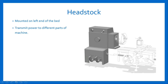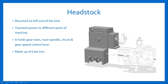The live center can be attached in the spindle. Headstock holds gear train, main spindle, chuck, and gear speed control lever. It is aligned with the tailstock. It is made up of cast iron and has two driving mechanisms: first is back geared mechanism and second is belt driven mechanism.